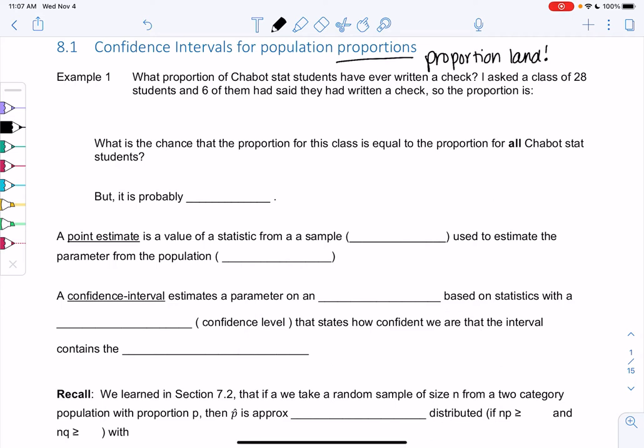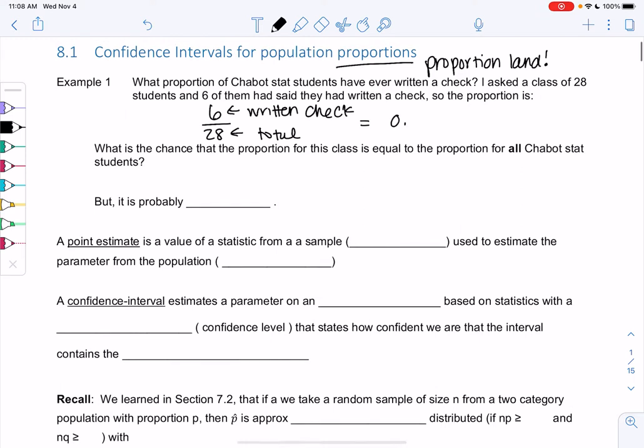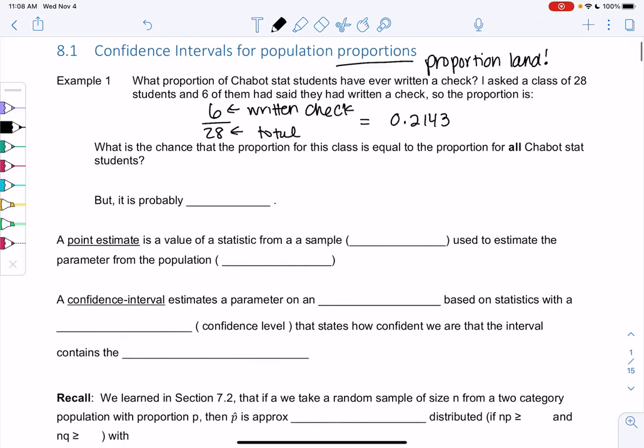Example one: what proportion of Chabot stat students have written a check? I asked a class of 28 total students and six of them had said they had written a check. So the proportion would be six who had written a check out of the 28 total. If you do 6 divided by 28 you should get 0.2143. That's a proportion, about 21 percent but we'll leave it in proportion form.